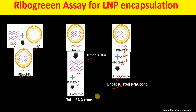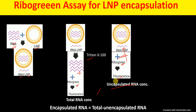To determine the concentration of encapsulated RNA, we simply subtract: encapsulated RNA concentration = total RNA concentration minus unencapsulated RNA concentration. Thank you.